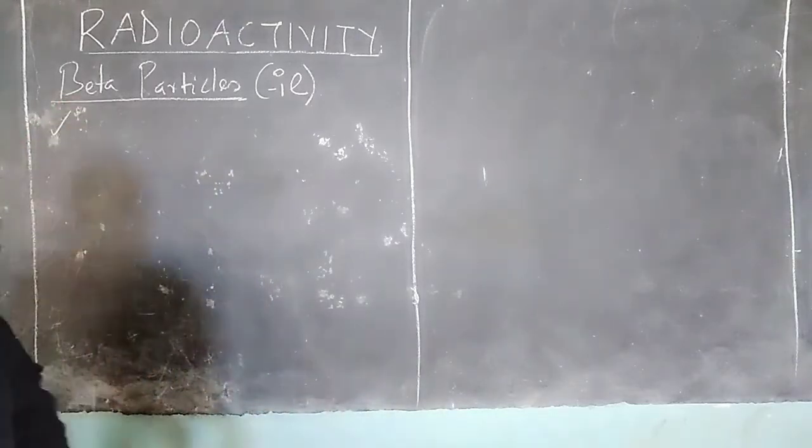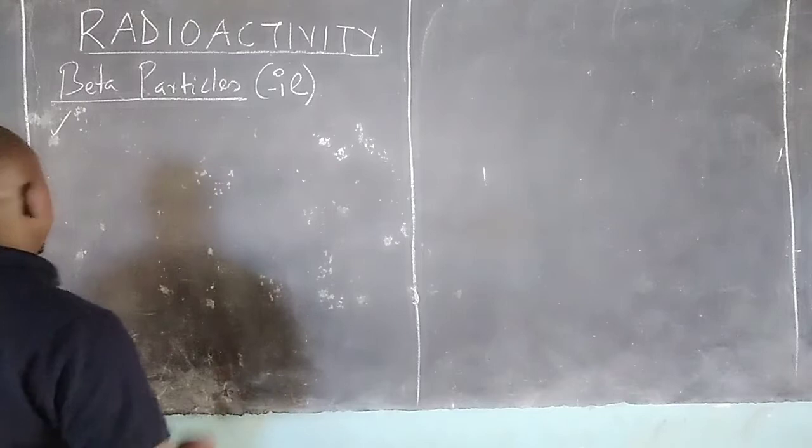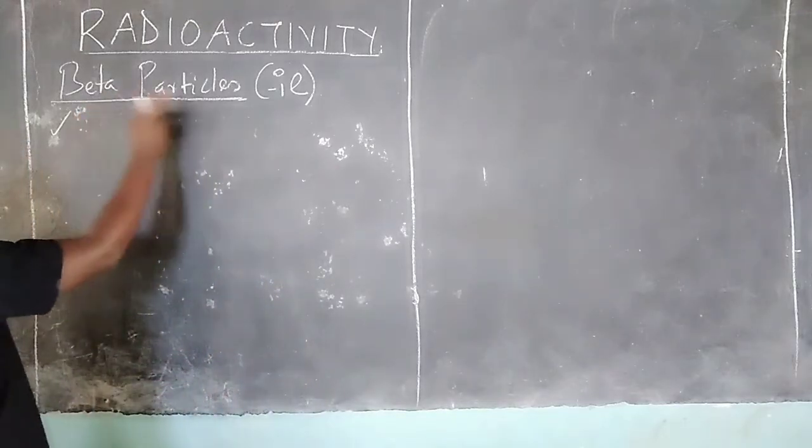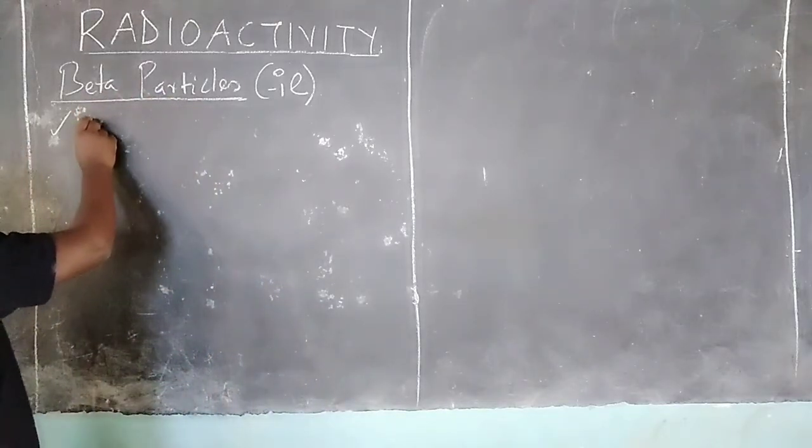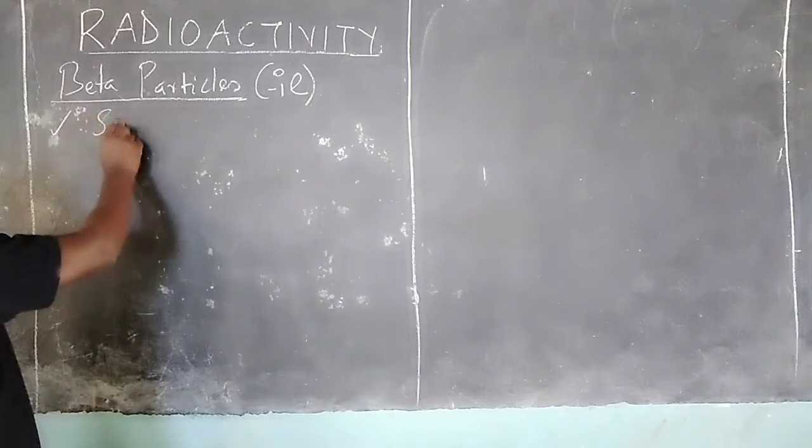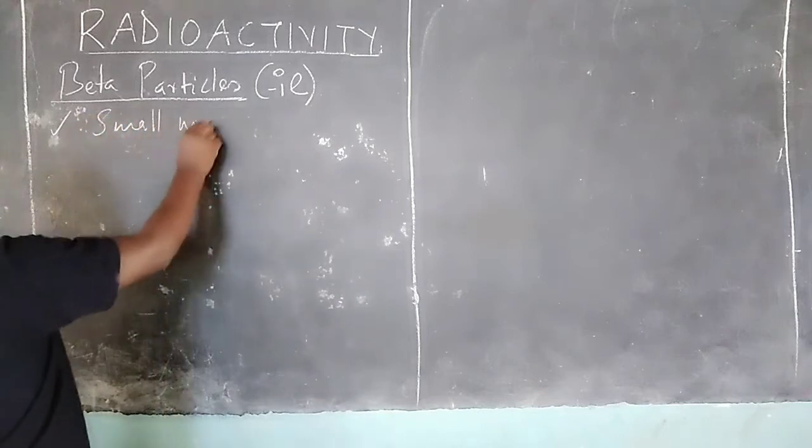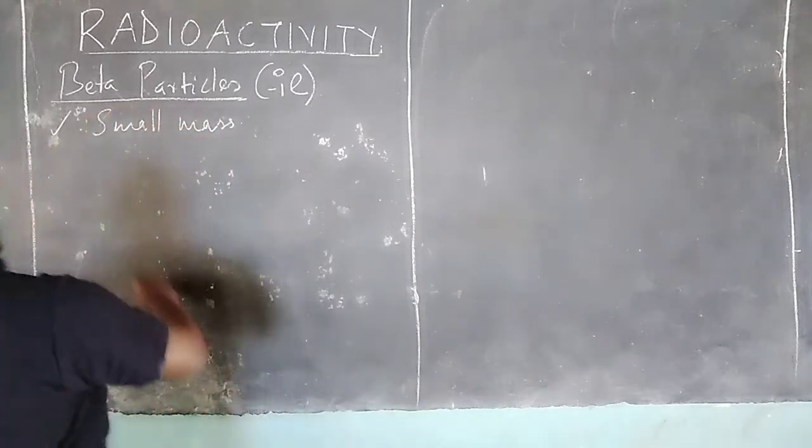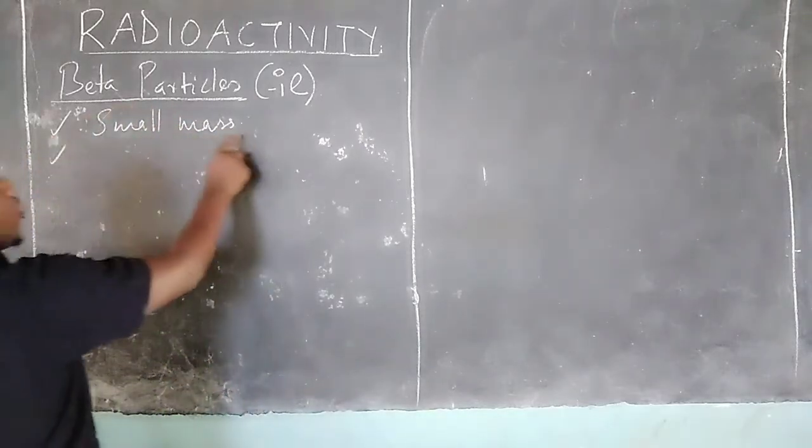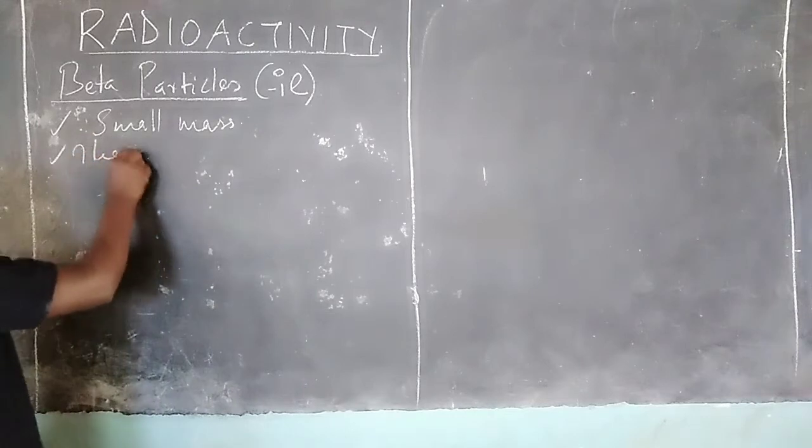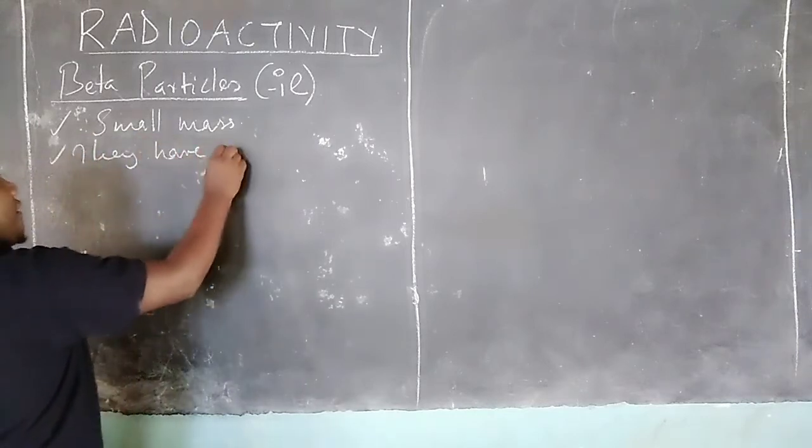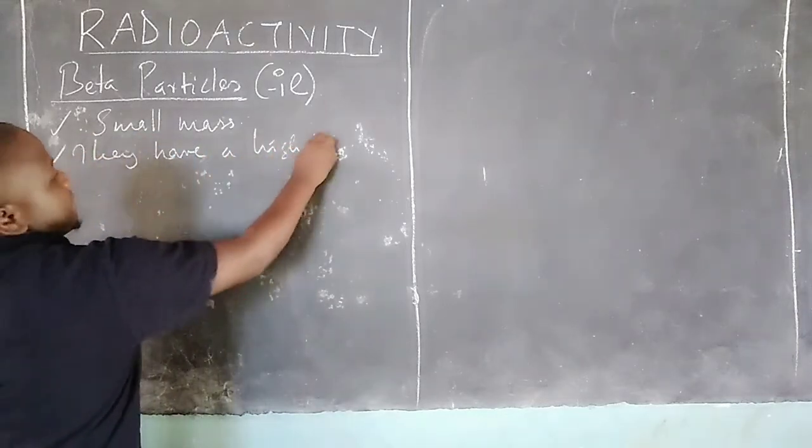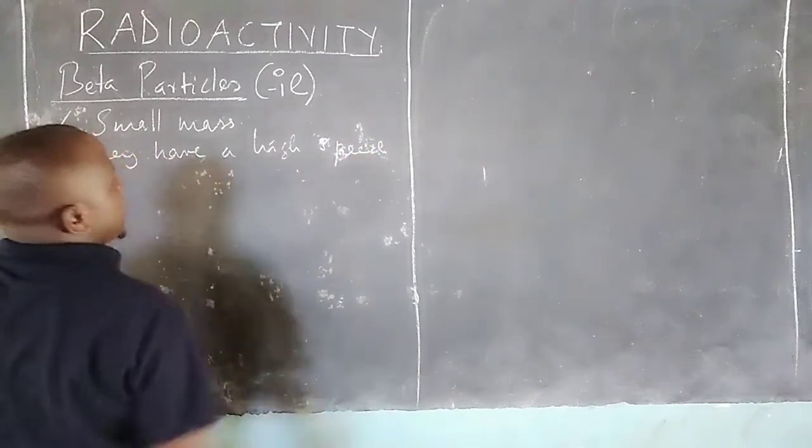Therefore, when the properties of beta particles are studied further, we find that they are lighter. The electrons released are lighter of a smaller mass. They have a small mass. When we compare them to alpha particles, due to the small mass, they have a high speed.